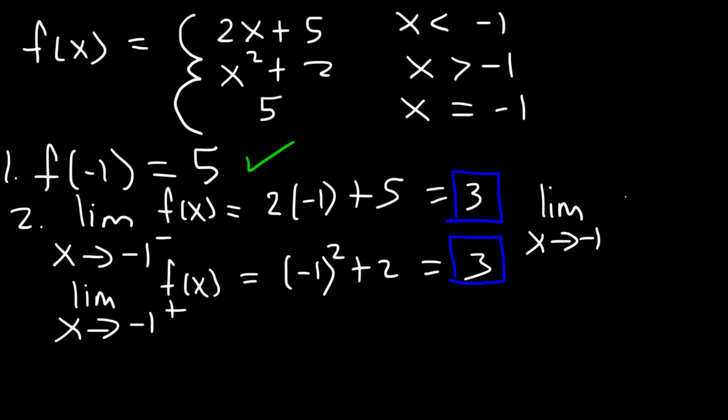Since the limit exists but step 3 fails, we have a hole — a removable discontinuity. The limit has a y value of 3, but the function has a y value of 5. In the last example, the jump discontinuity was a non-removable discontinuity. If step 2 fails and the two one-sided limits differ, it's typically a jump discontinuity. If those two values match but step 3 fails, it's usually a hole — a removable discontinuity.